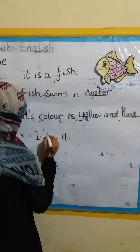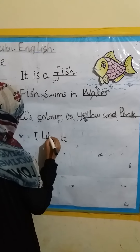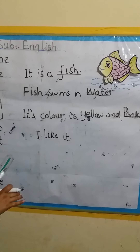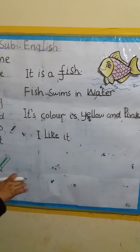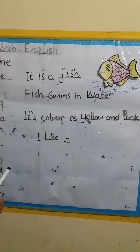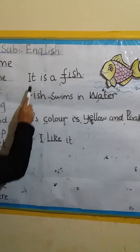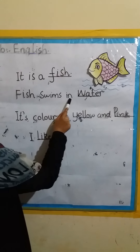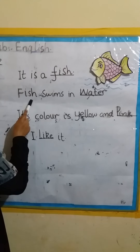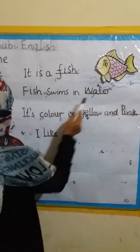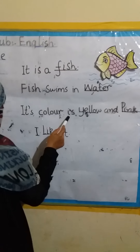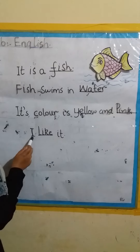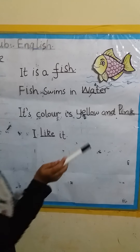I like it. Now we will revise. It is a fish. Fish swims in water. Fish swims in water. Its color is yellow and pink. Its color is yellow and pink. I like it.